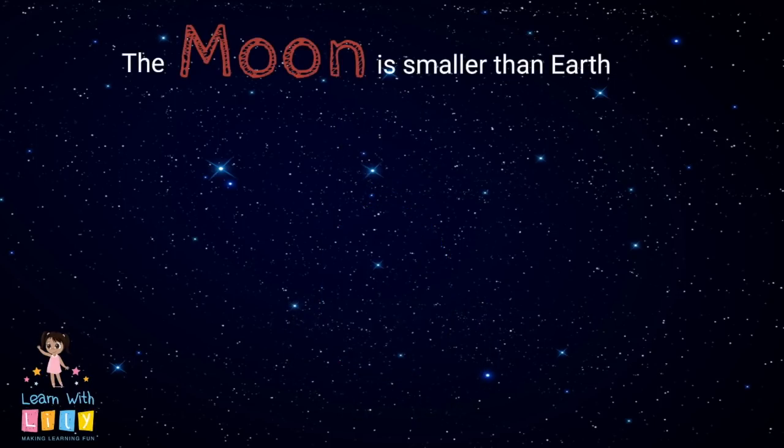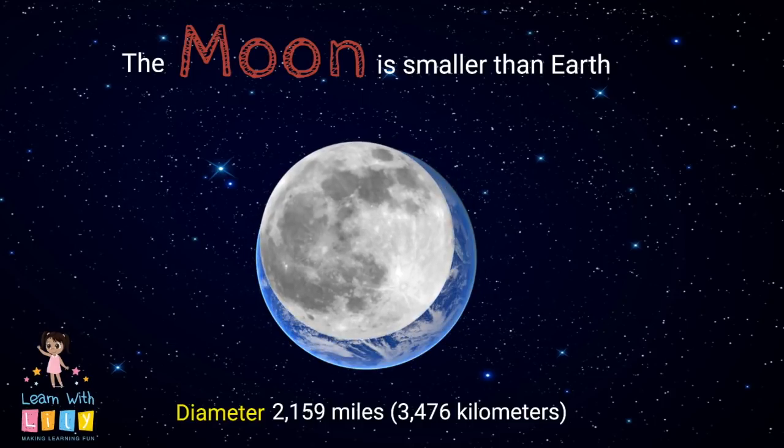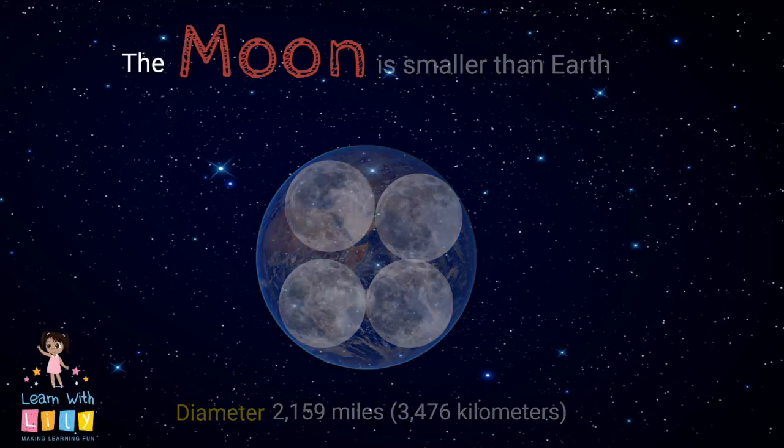The Moon is much smaller than the Earth, and its diameter is just 2,159 miles, or 3,476 kilometers. That means the Moon would fit in the Earth four times.